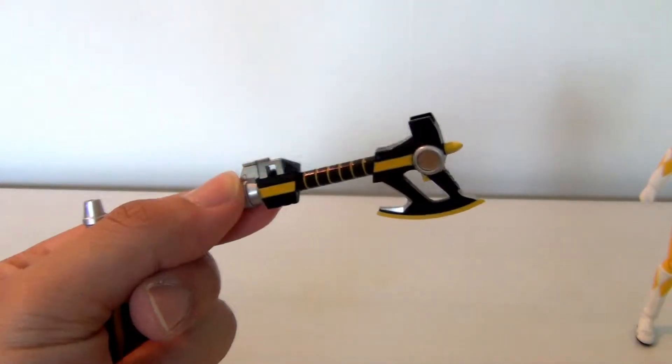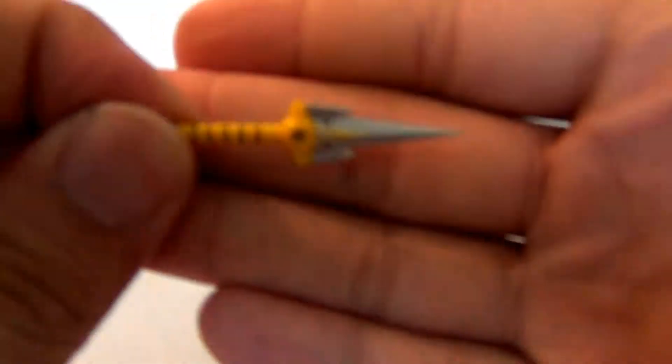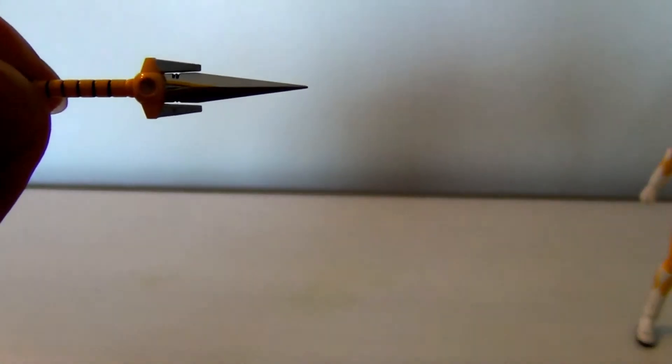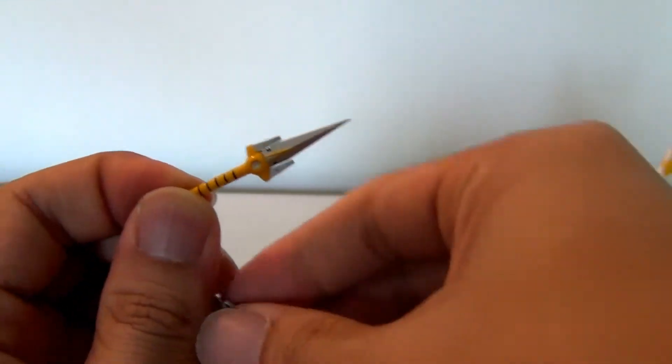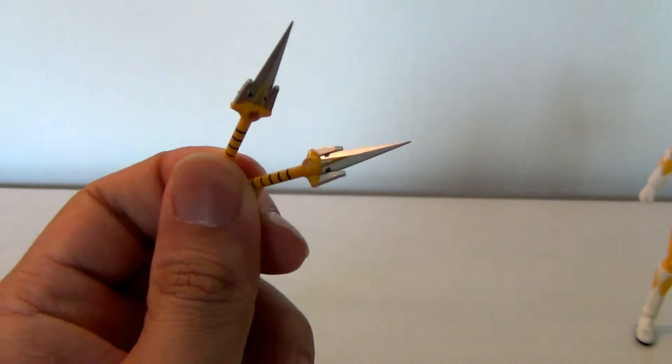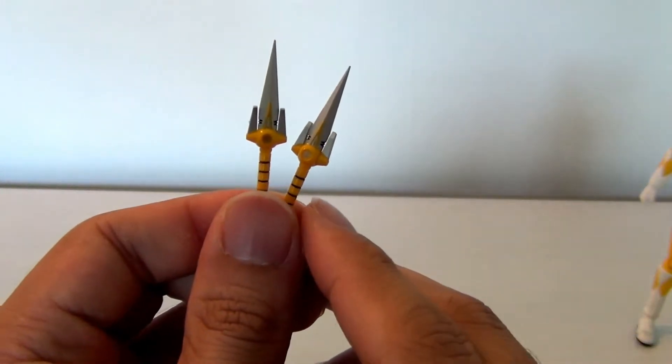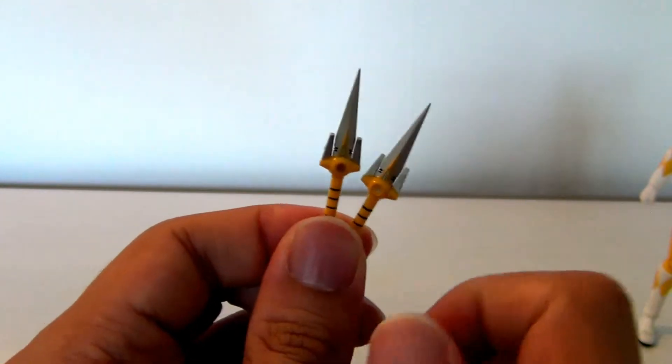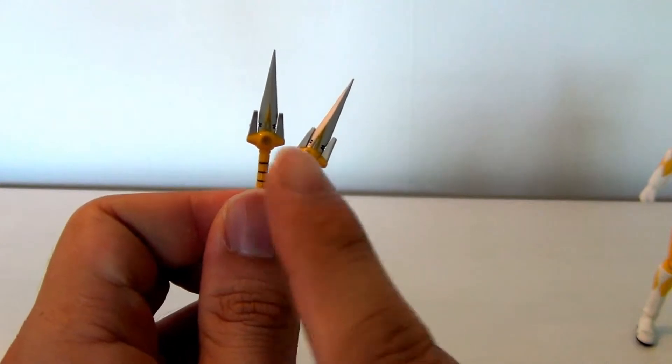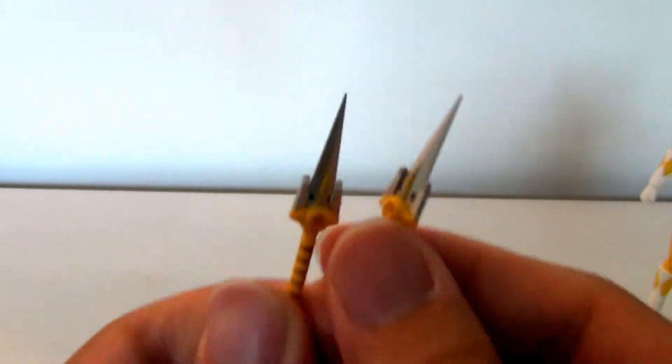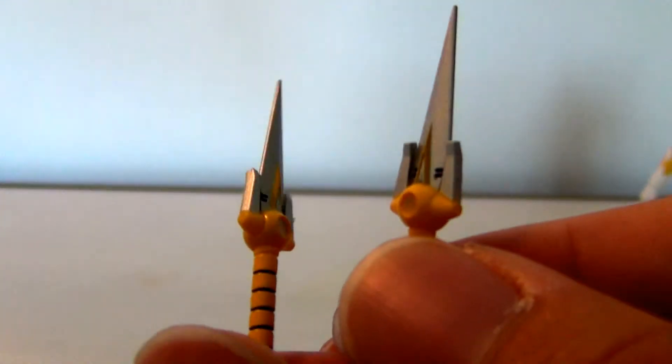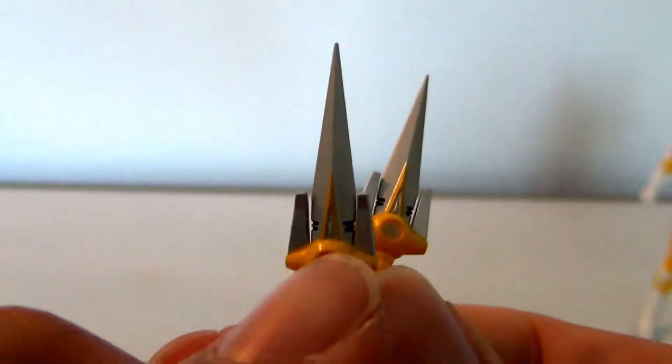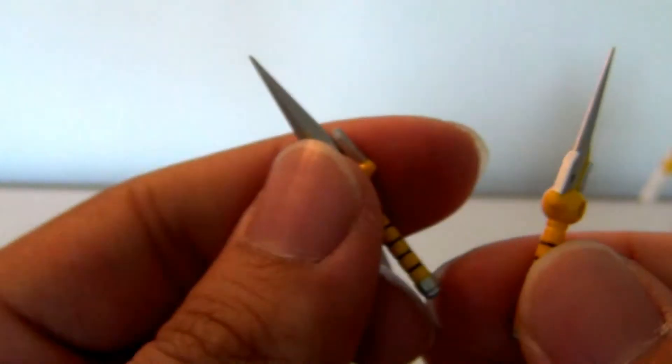Next let's take a look at Trini's accessories. We have the Power Daggers, number one and number two. If you watched my Black Ranger review, you'll notice these don't have the little peg sticking out, and that's because this is just for Trini. The ones the Black Ranger came with are for the combined form. For such a small accessory, they painted in here, they put those little rivets there. This is spot on. I love how SH Figuarts does all of this.